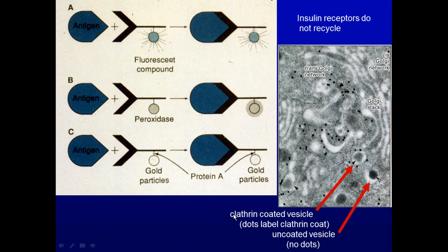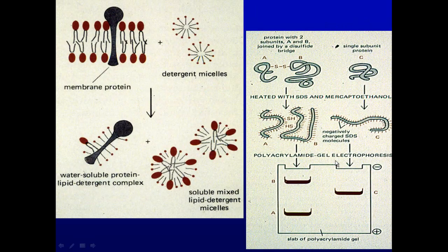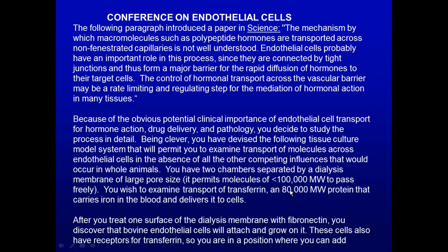For using electron microscopy to follow vesicles, you would use immunogold particles — different sizes can be used to trace transport through the cell. However, to look for protein degradation, you need a gel to determine if molecular weight has changed. This conference is based on an article from Science about transferrin going through endothelial cells, describing how to make a chamber with a filter that proteins can pass through.